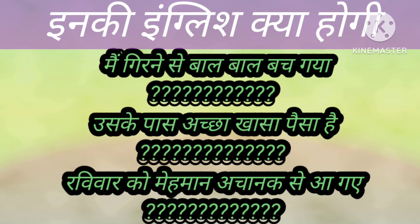Hello everyone, welcome to my channel English Perfection. Do you know the English of these sentences? मैं गिरने से बाल बाल बच गया, उसके पास अच्छा खासा पैसा है, रविवार को मेहमान अचानक से आ गए. If you don't know, then be with me till the end of the video. We will cover three structures: बाल बाल बचना, अच्छा खासा, and अचानक से आना. Without further delay, let's get started.